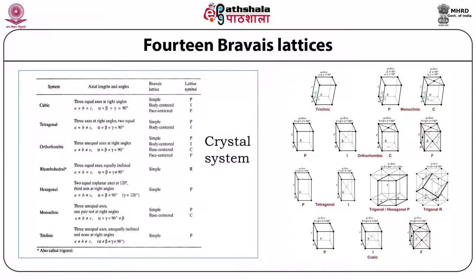In base centering, only two opposite faces have center lattice points. In face centering, all six faces have a lattice point at their center — this is called face-centered lattice or F-type. So we have four types of lattices: primitive P-type, body-centered I-type, base-centered C-type, and face-centered F-type. These four lattice types distributed among the seven crystal systems total to 14 Bravais lattices.